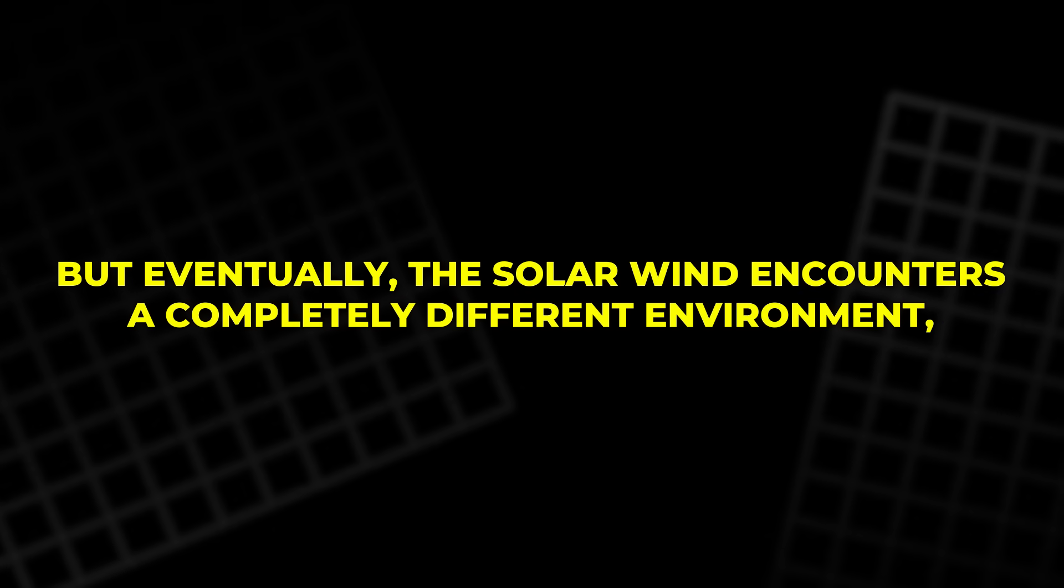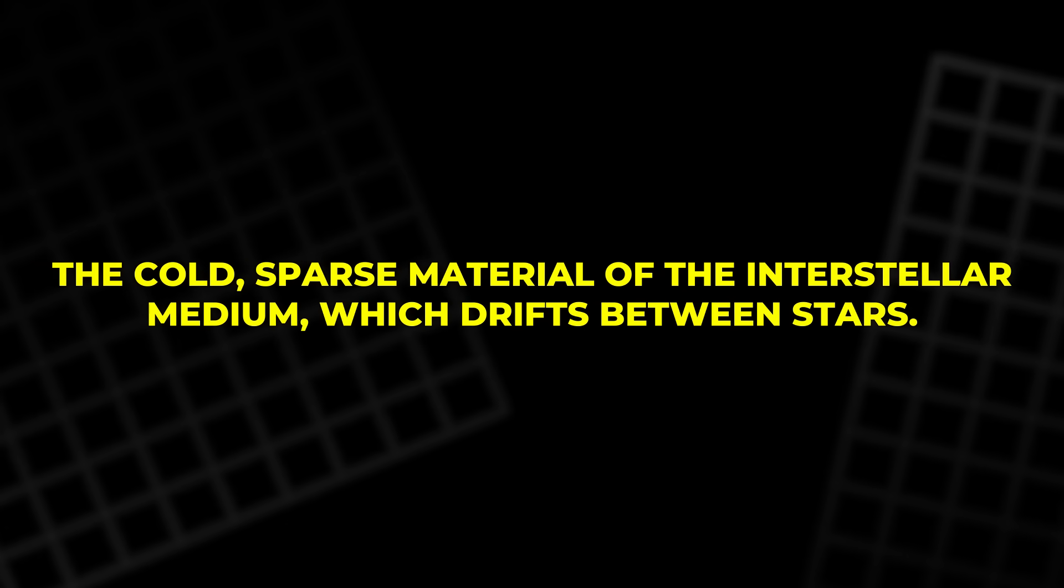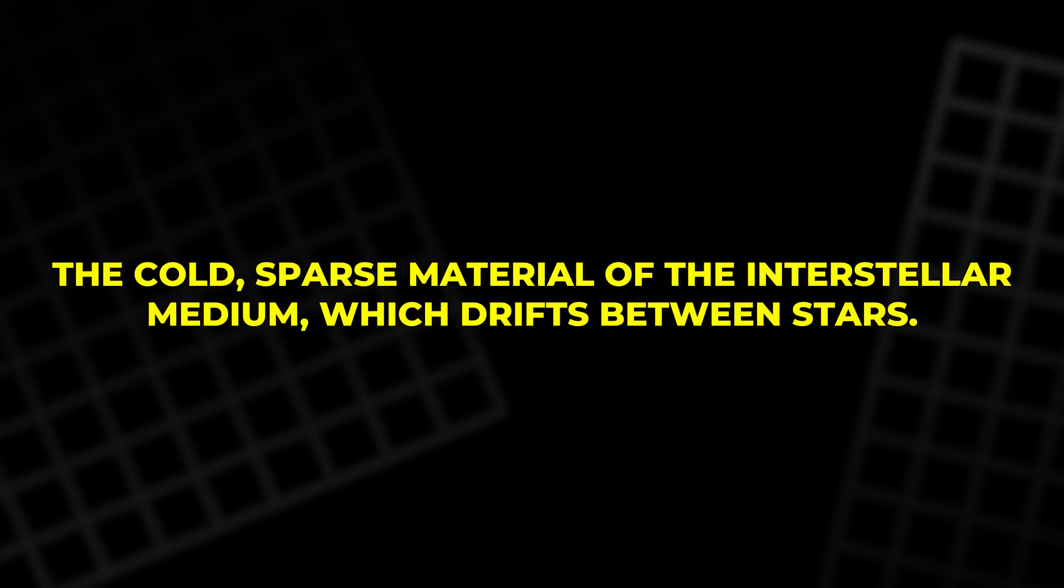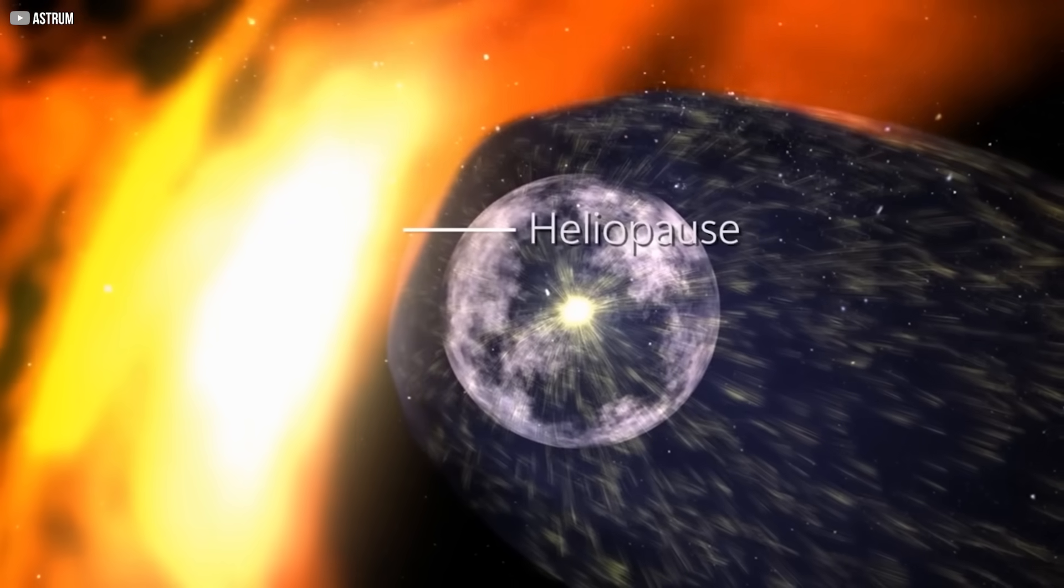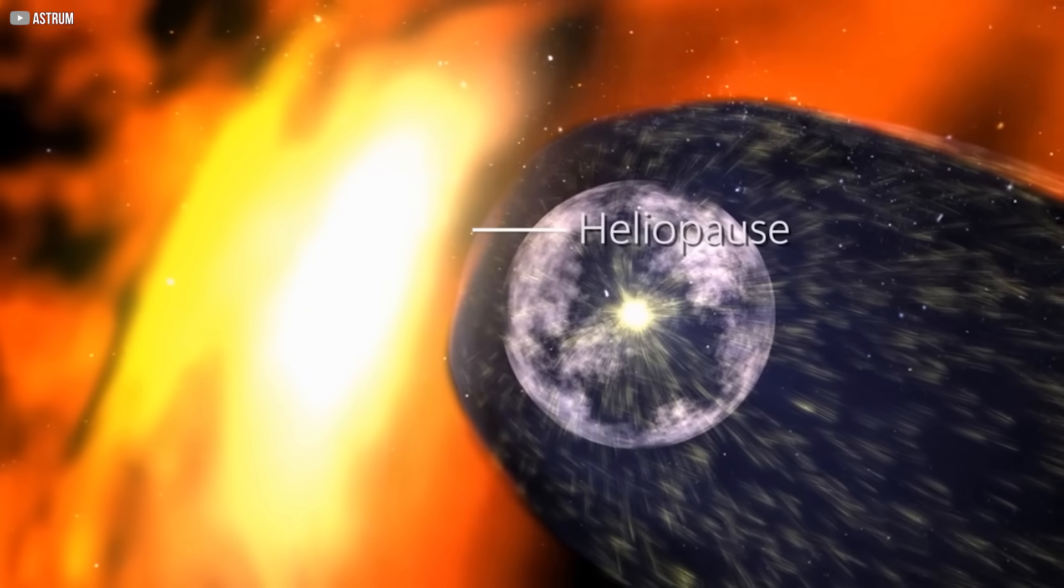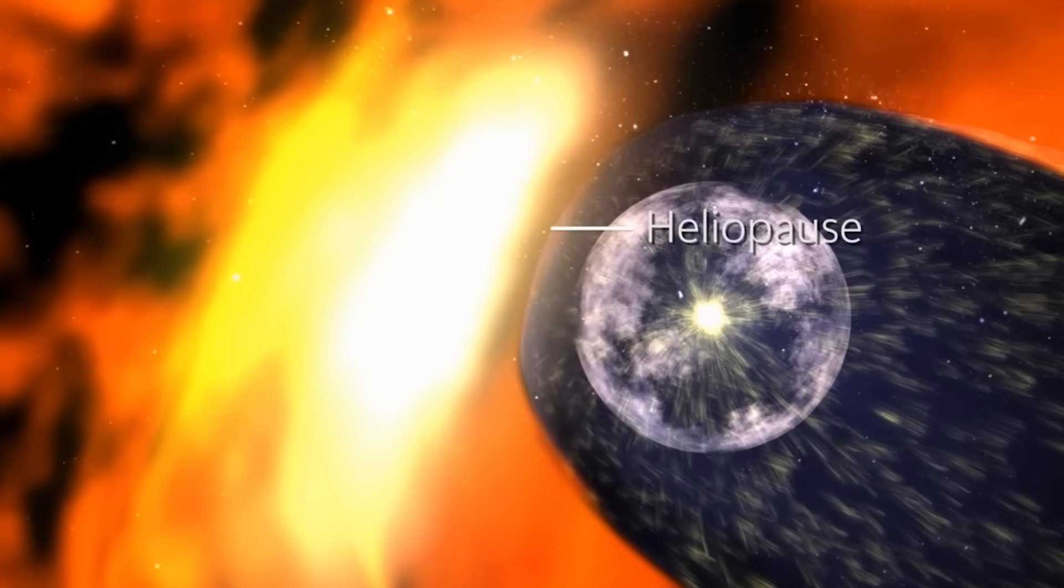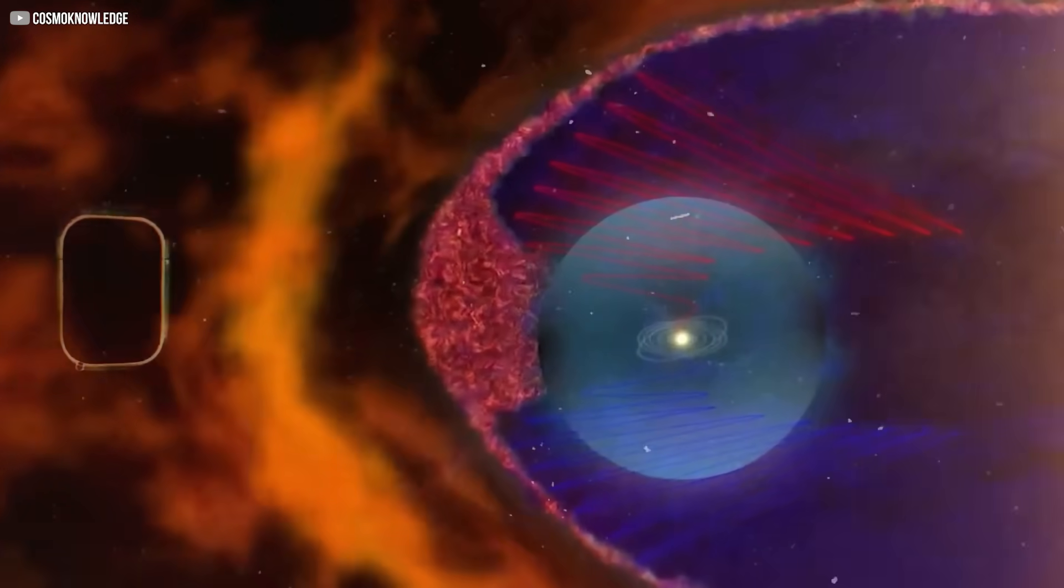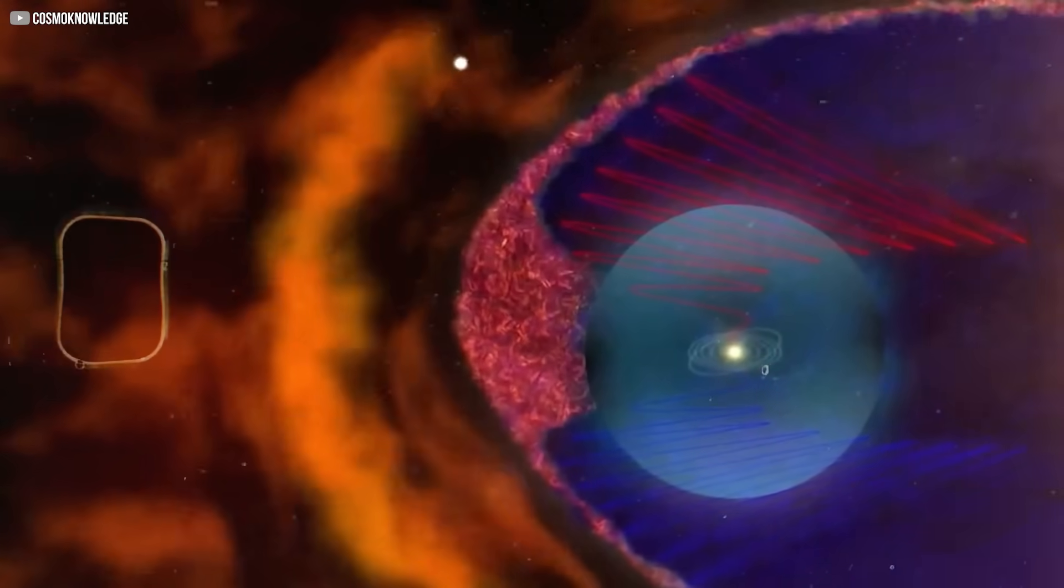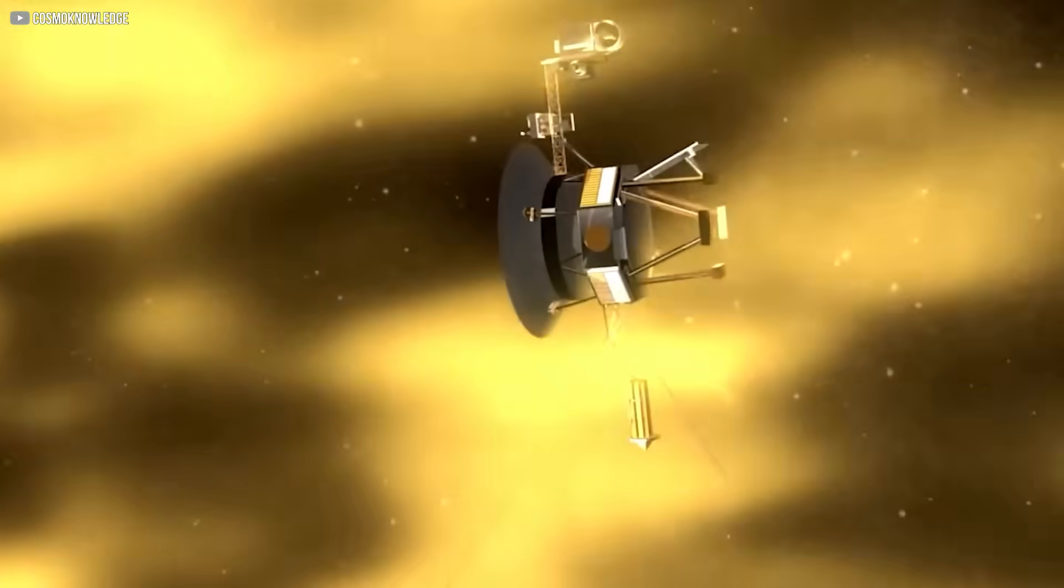But eventually, the solar wind encounters a completely different environment, the cold, sparse material of the interstellar medium, which drifts between stars. This meeting point, where the solar wind slows down and interacts with the interstellar medium, is called the heliopause. It's not a physical barrier, but rather a transition zone, where two forces collide, creating a region of intense energy and surprising heat.